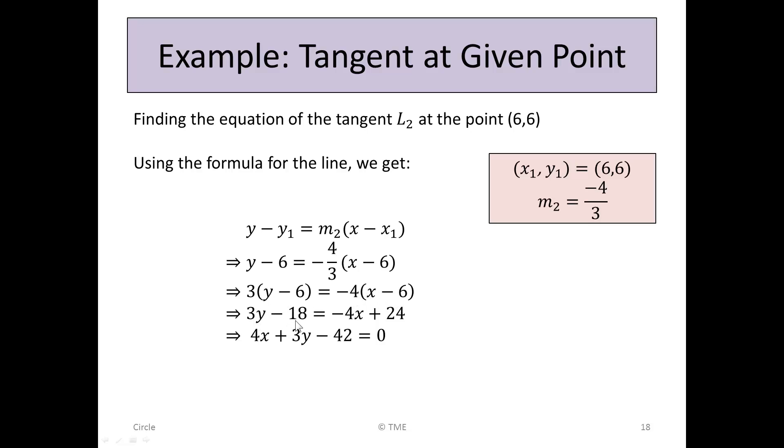Multiplying in, we get 3y - 3 times 6 is 18, plus by minus is minus, and -4 times x is -4x, minus 4 by minus 6 is plus 24. Taking the x term to the other side, we get 4x + 3y. And taking the 24 to the other side, we get minus 42. 18 and 24 give 42.